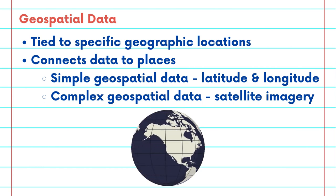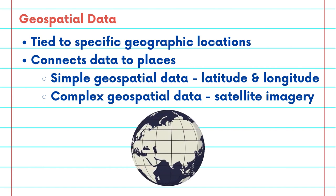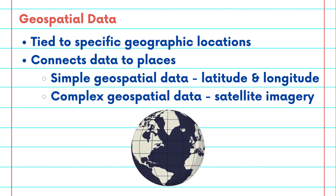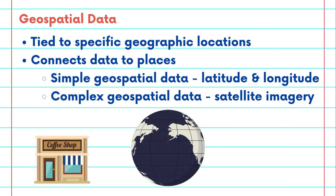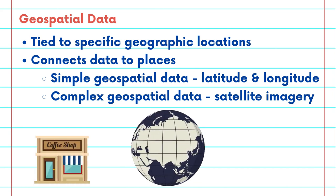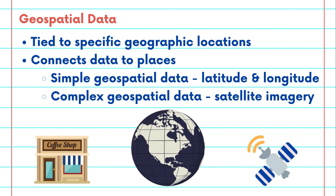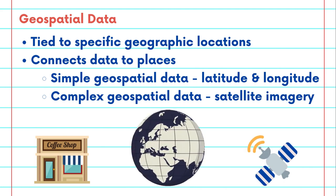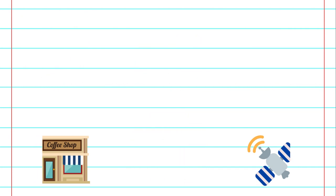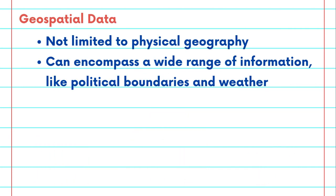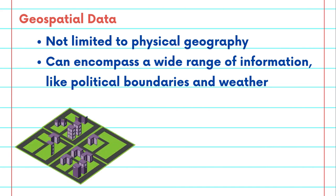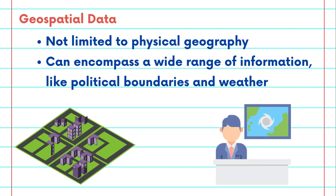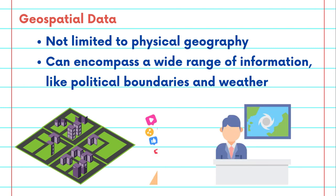Geospatial data comes in various forms. It could be a simple latitude and longitude, like a coordinate that guides you to your favorite coffee shop. Or it might be complex data like satellite imagery showing us detailed views of our Earth from space. This data isn't limited to physical geography alone — it can encompass a wide range of information from political boundaries to weather patterns, and even the location of your social media posts.